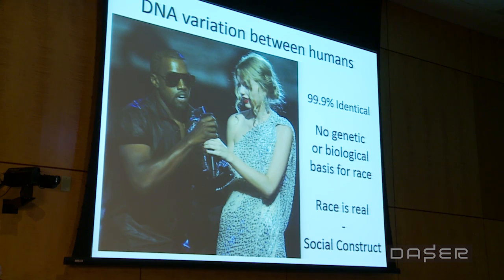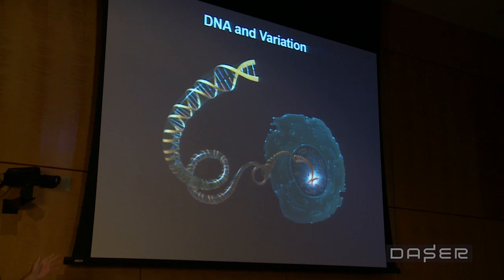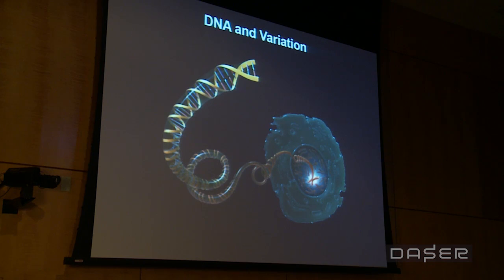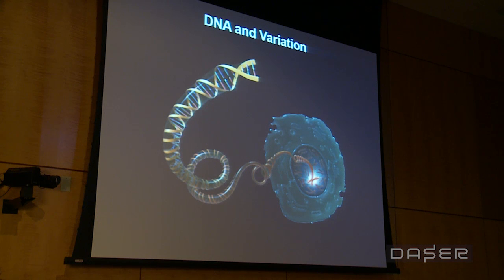Looking more closely at our DNA and our differences within that 0.1%: here's a picture of an unraveled chromosome. The sequence of nucleotides that make up DNA is just four bases — G, A, T, and C. Most of the time, 99% of the time, a given position is the same across all of us, but sometimes there's a difference — one person may have an A where someone else has a T. That's what we call differences in DNA.